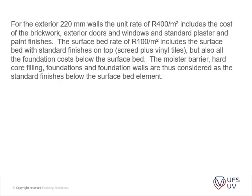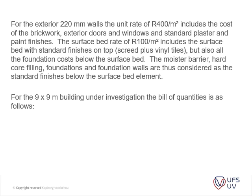The average unit rate of an element is the cost of the element itself plus standard finishes on both sides — meaning the finishes are included in the rates above. For the 220mm exterior walls, the R400/m² includes brickwork, exterior doors and windows, and standard plaster and paint finishes. The surface bed rate of R100/m² includes the surface bed with finishes on top such as screed and vinyl tiles, but also all foundation costs below — moisture barrier, hardcore filling, foundations, and foundation walls.